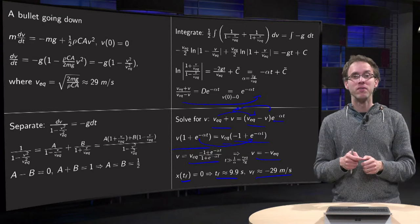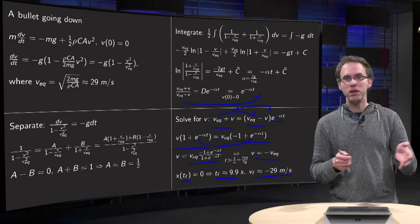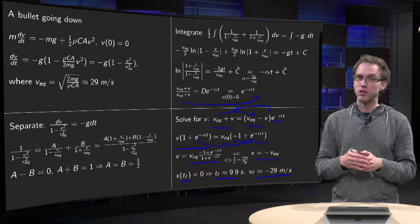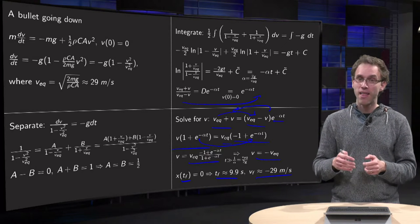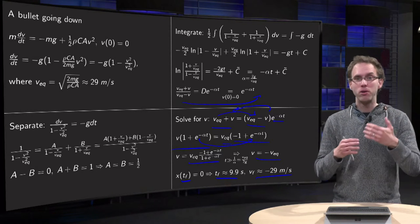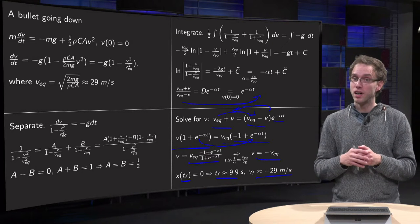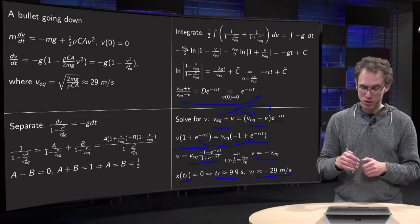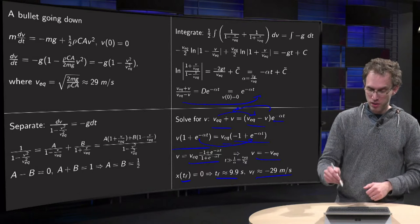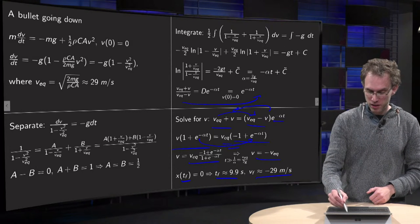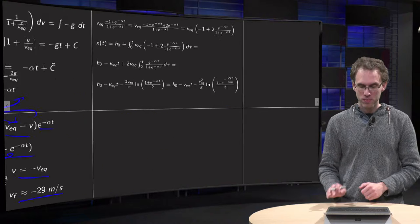If you were getting several hours you would know you are wrong, and if you were getting milliseconds again you would know you are wrong. But 10 seconds is approximately fine and also makes sense intuitively that you reach more or less your equilibrium velocity. For the second part of the video, we integrate our v in order to find our t_final analytically.